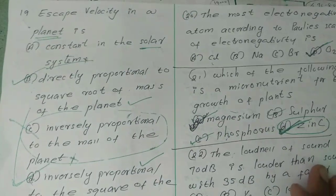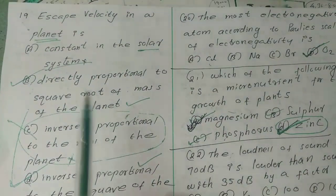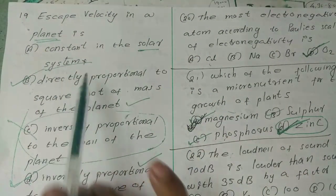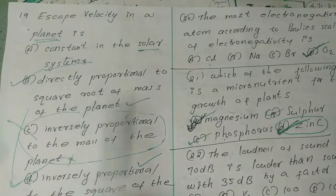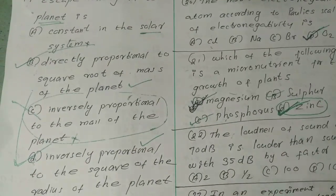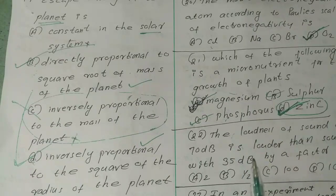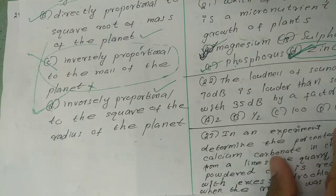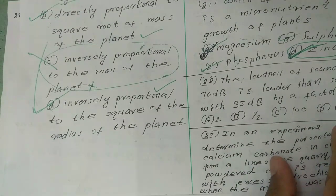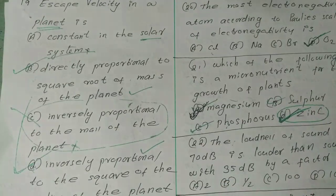Escape velocity on a planet is: Option A, constant in the solar system. Option B, directly proportional to square root of mass of the planet. Option C, inversely proportional to the mass of the planet. Option D, inversely proportional to the square of the radius of the planet. These are the 4 options.